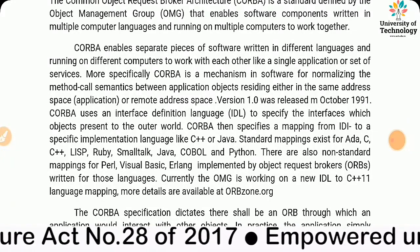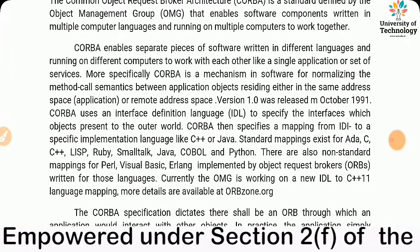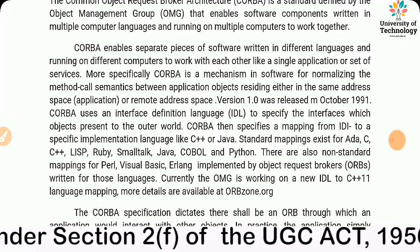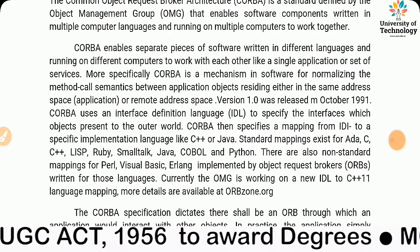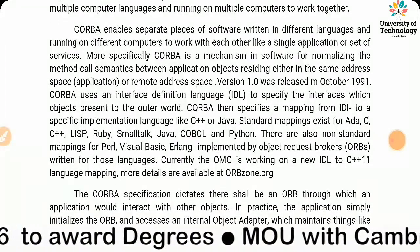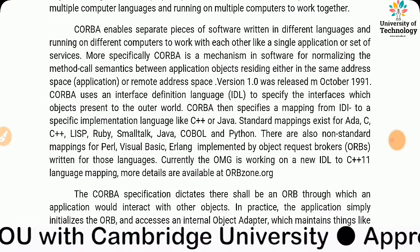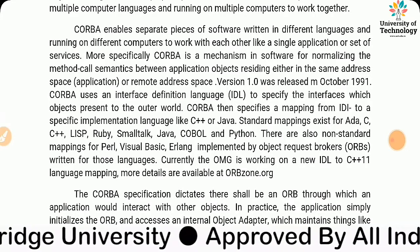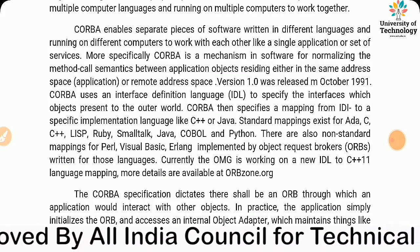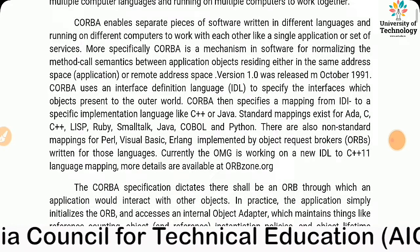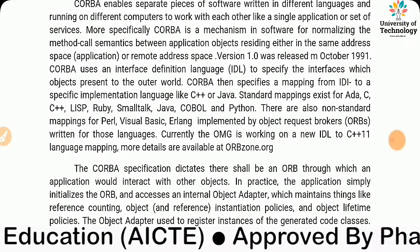Version 1.0 was released in October 1991. CORBA uses an IDL — Interface Definition Language — to specify the interfaces which objects present to the outer world. CORBA then specifies a mapping from IDL to specific implementation languages like C++, Java. Standard mappings exist for Ada, C, C++, Lisp, Ruby, Smalltalk, Java, COBOL, and Python.